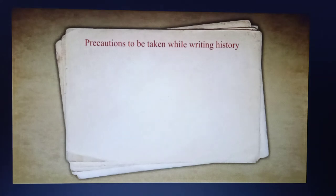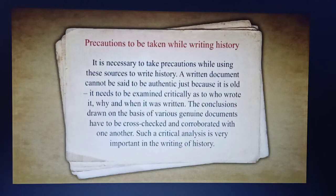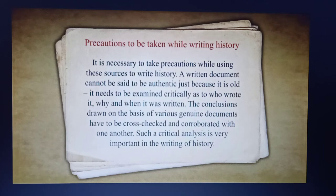Precautions to be taken while writing history: It is necessary to take precautions while using these sources to write history. A written document cannot be said to be authentic just because it is old. It needs to be examined critically as to who wrote it, why and when it was written. The conclusions drawn on the basis of various genuine documents have to be cross-checked and corroborated with one another. Such a critical analysis is very important in the writing of history.